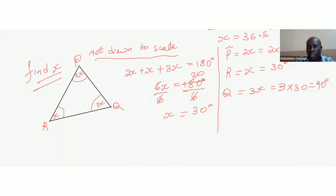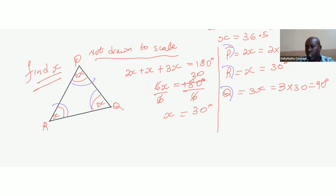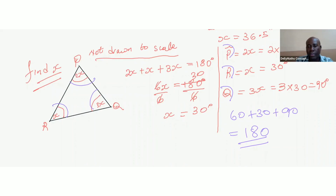Finally, let's verify: angle P plus angle R plus angle Q — 60 plus 30 plus 90 — does equal 180 degrees. This confirms that the total interior angles of any triangle will add to give 180 degrees. That's it for now.